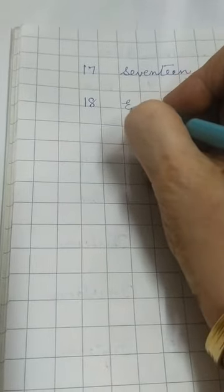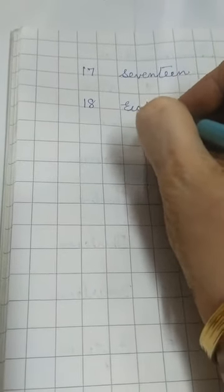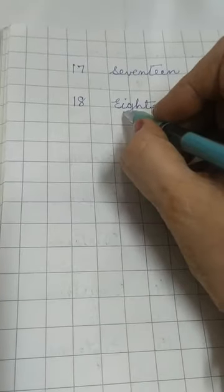Next. Next is 18. Eight. Now just now we did 8. E-I-G-H-T, eight. E-N. Double E-N. Remember there is no double T here. You will write 8 and E-N. Eighteen.